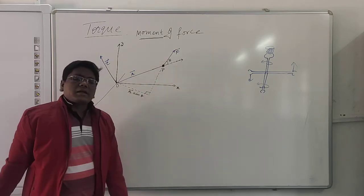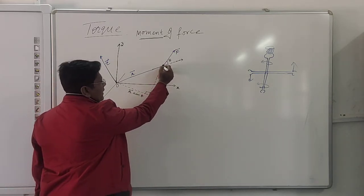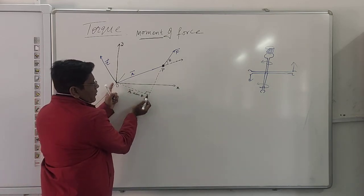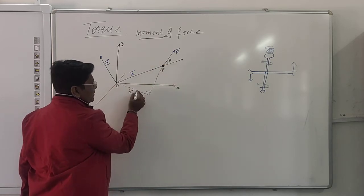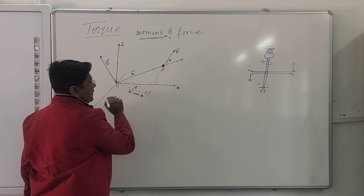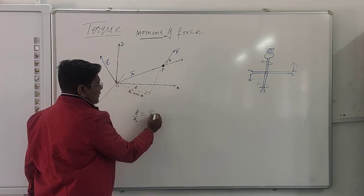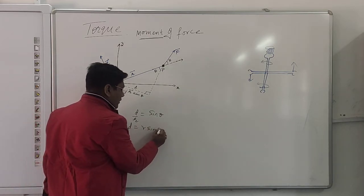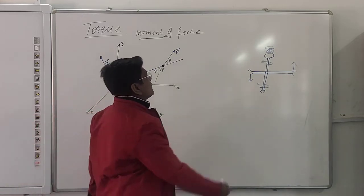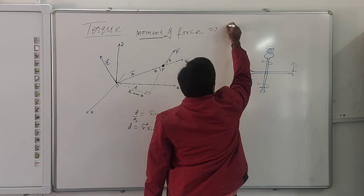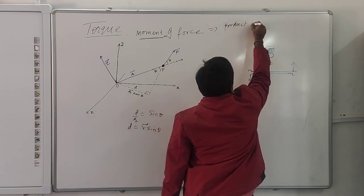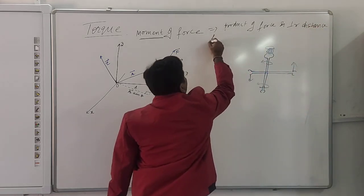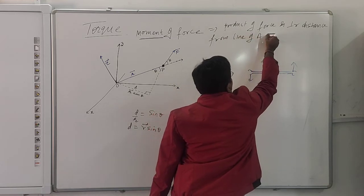Now let us take the component of r with respect to this force. If I extend the vector along this line, the perpendicular distance from the origin to the line of action will be d, which is the opposite side of this triangle. So d divided by r equals sine of theta, which gives us d equals r sine theta. Therefore, torque is the product of force and the perpendicular distance from the line of action, which is r sine theta.